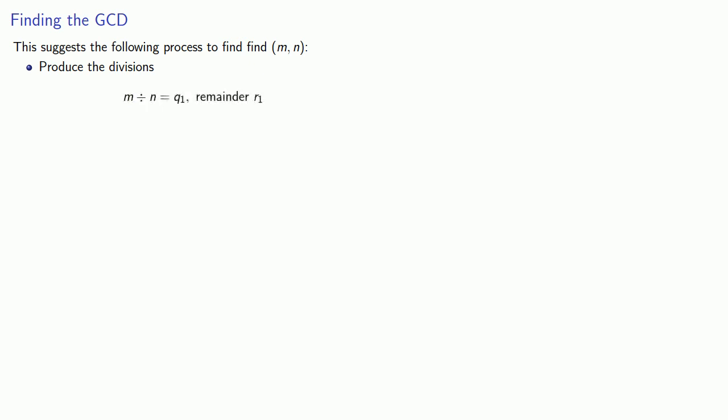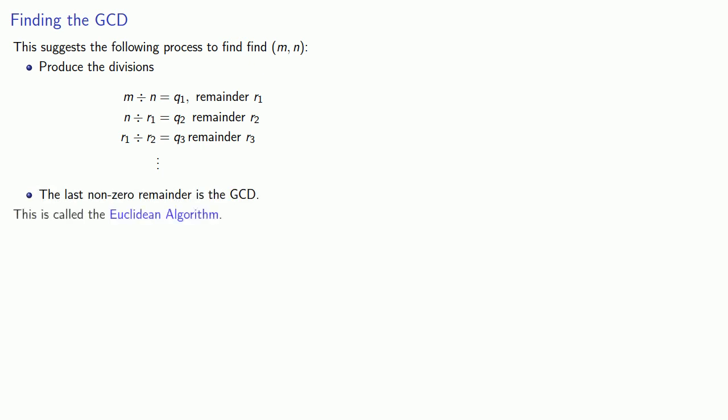We'll produce the divisions: M divided by N gives some quotient with some remainder; N divided by that remainder gives another quotient with another remainder; and so on. The last non-zero remainder is the greatest common divisor. This method is known as the Euclidean algorithm.